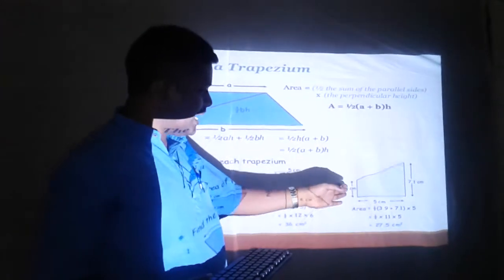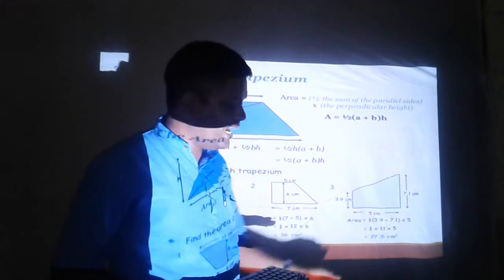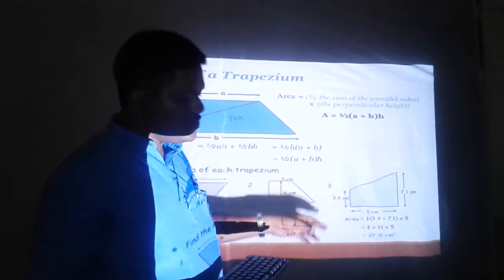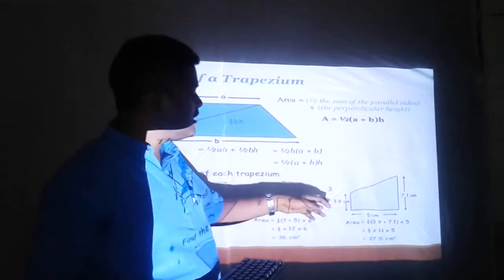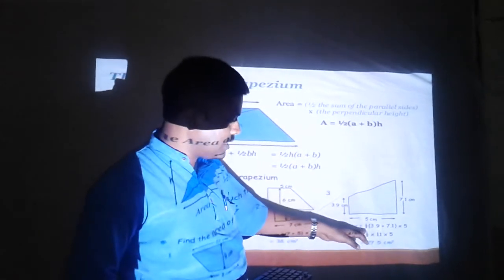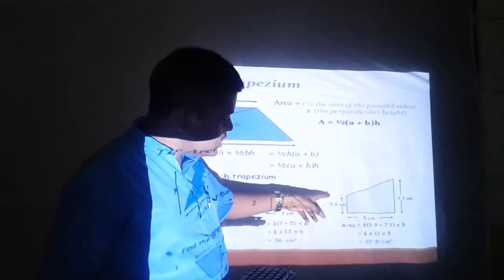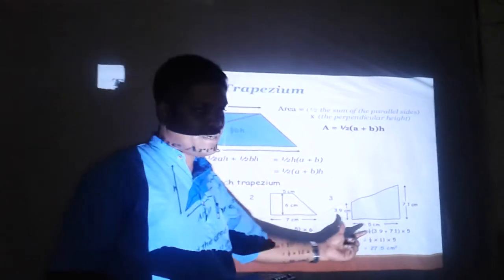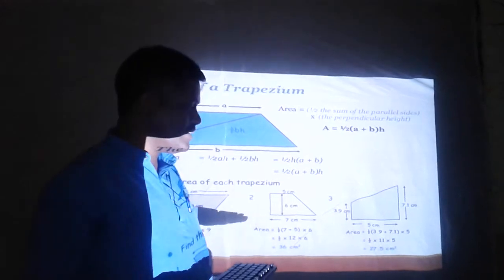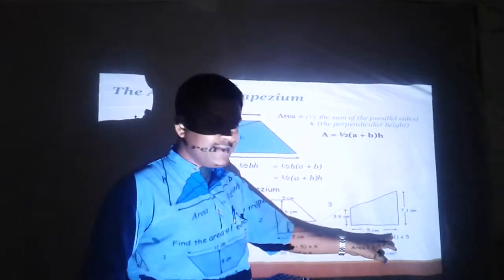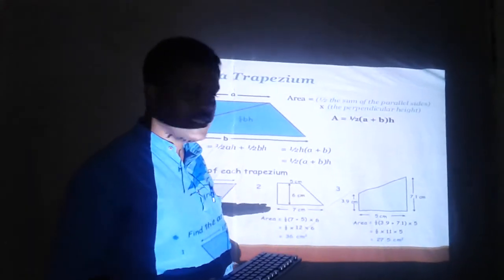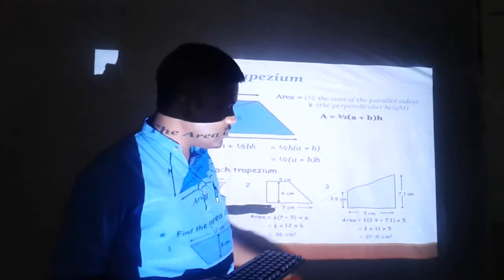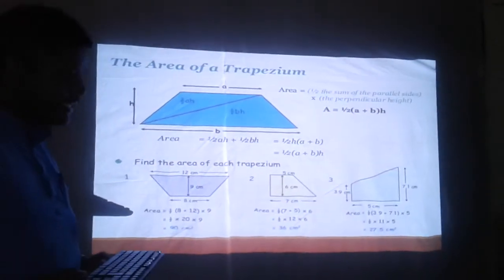In the third figure, the parallel sides are vertical and the perpendicular distance is horizontal. We should use the same formula. The area equals one-half into the sum of the parallel sides — 3.9 plus 7.1 — into the perpendicular distance of 5 cm. Here, 3.9 plus 7.1 becomes 11. Therefore, one-half into 11 into 5 equals 27.5 cm squared.